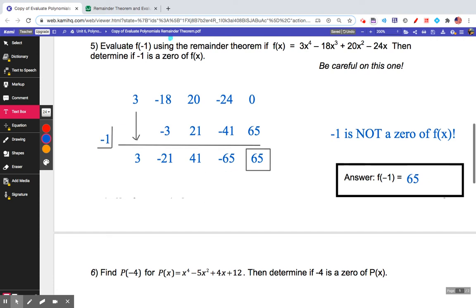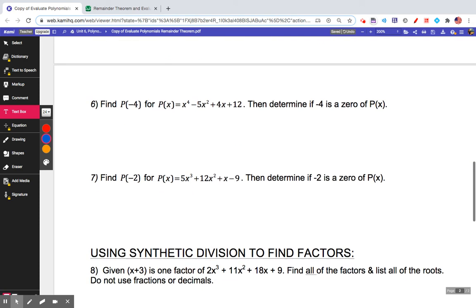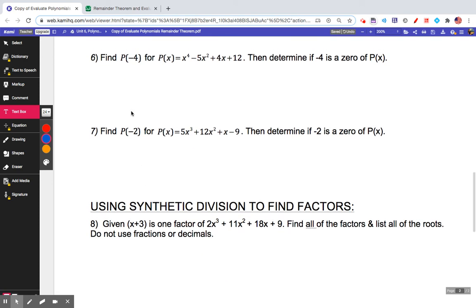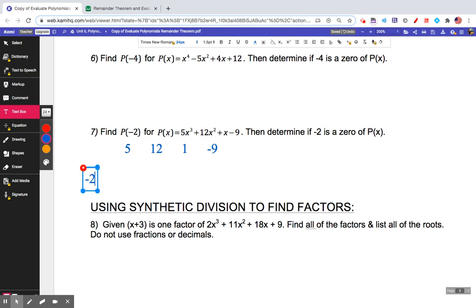Had I gotten a remainder of zero, then this -1 would have been a zero of the function. Starting to feel like you're getting a handle on the remainder theorem? What we want you to do is try number 6 and 7, and then you can come back and check. I'm just going to go over number 7 with you right here. I have 5, 12, 1, -9.